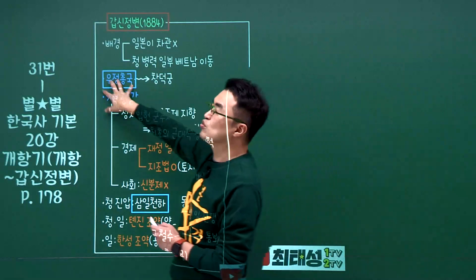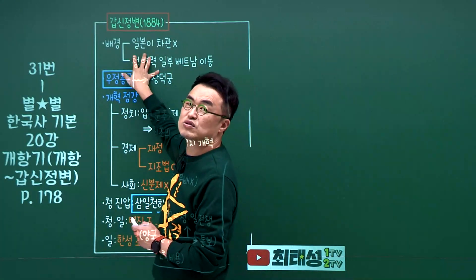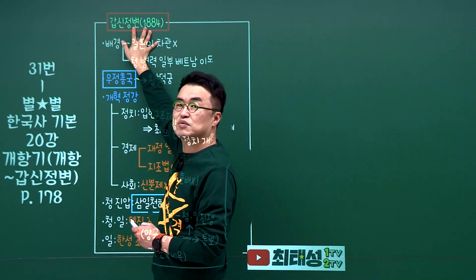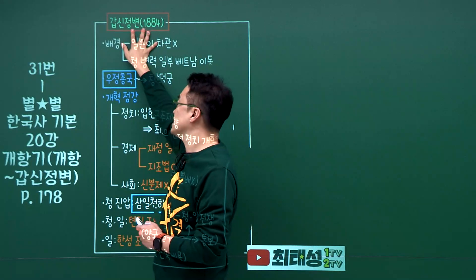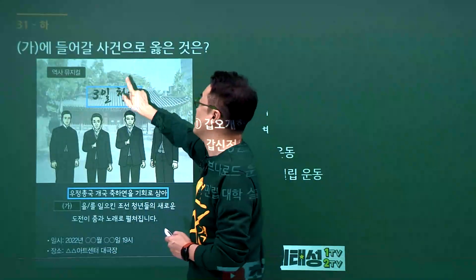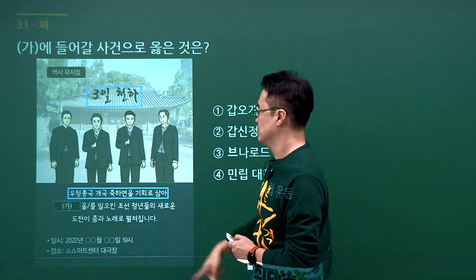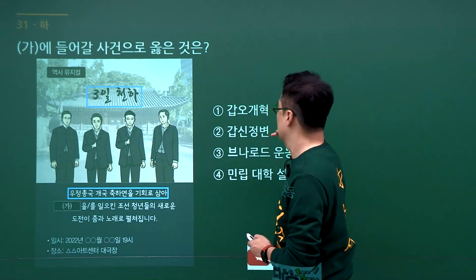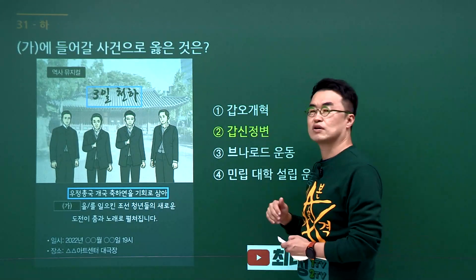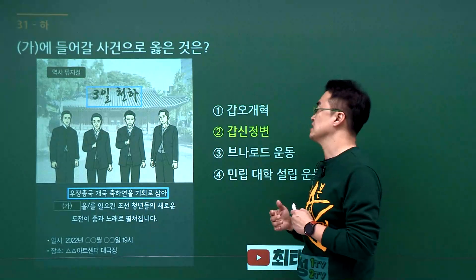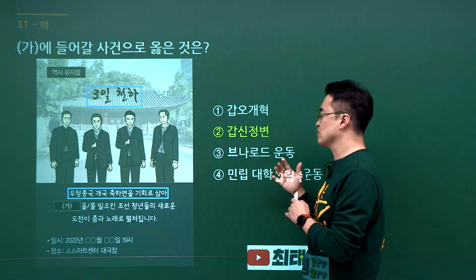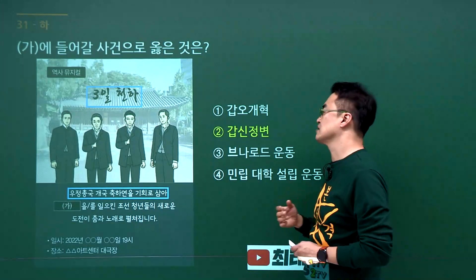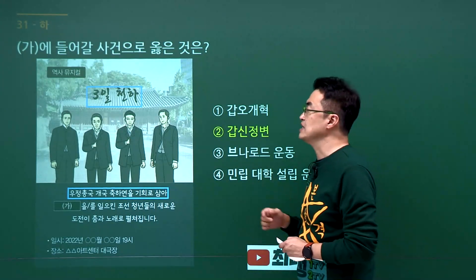갑신정변 문제입니다. 우정총국이라는 키워드가 나오면 무조건 갑신정변입니다. 문제에서 우정총국이 나왔으니 갑신정변이 정답입니다. 2번을 고르시면 됩니다. 가보기용(거문도 사건)은 이후이고, 국채보상운동과 물산장려운동, 민립대학설립운동은 모두 일제강점기입니다. 정답은 2번입니다.